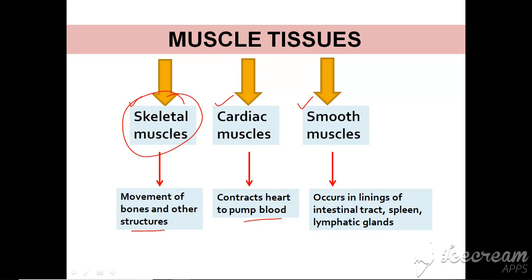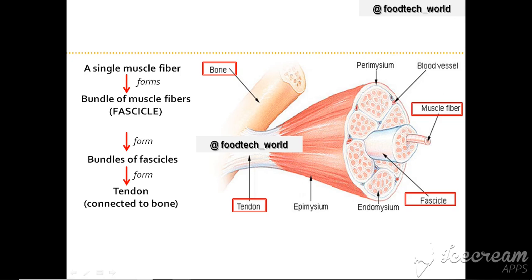This is the structure of skeletal muscle tissue. The basic unit or starting unit of skeletal muscle tissue is myofibril. When myofibrils combine they form a muscle fiber — a long, thin, hair-like structure surrounded by the endomysium, which is a connective tissue. When muscle fibers combine they form a bundle-like structure called a fascicle, which is surrounded by the perimysium.